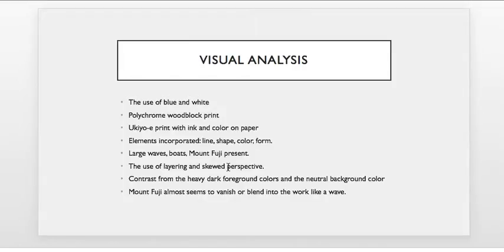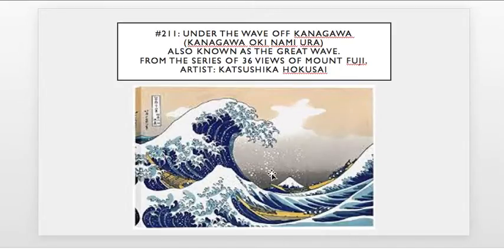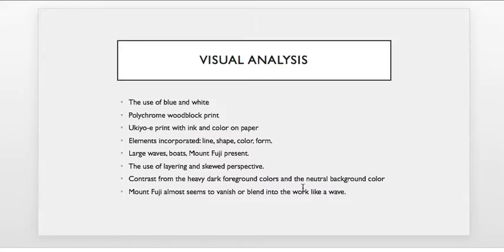We see the contrast from the heavy, dark foreground as it recedes into the background — discussing the idea of linear perspective. The closer something is to you, the darker, more prominent, larger, and more detailed and defined it is. As it recedes into the background, it starts to fade. We see a hazy gray color and our eyes are slowly drawn back as the details get less as we head toward Mount Fuji. The wave even seems to look like it could almost swallow up Mount Fuji.